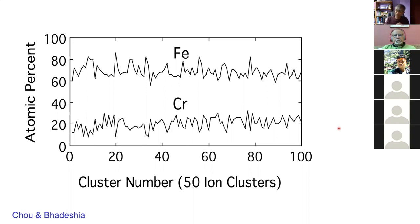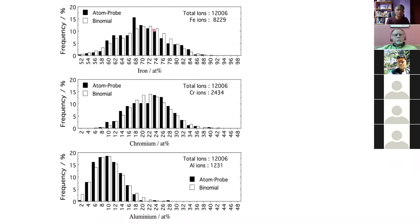The way to assess this is to compare the concentration distribution with a binomial distribution for 50-ion clusters. The black bars are the atom probe data and the white bars represent the expected binomial distribution. There is a fairly good match for iron, chromium, and aluminium between the calculated random-solution distribution and the measurement.